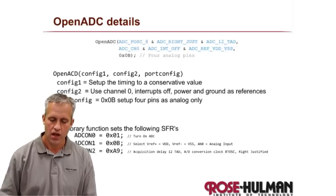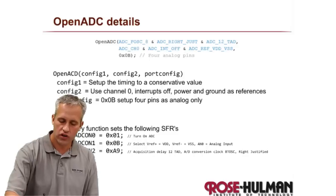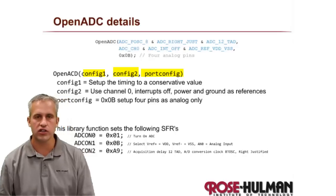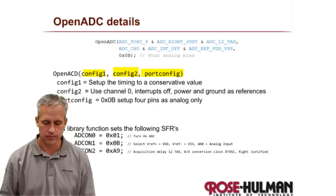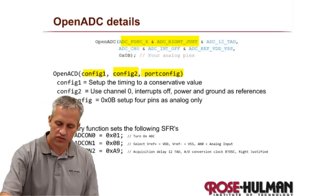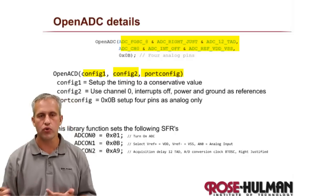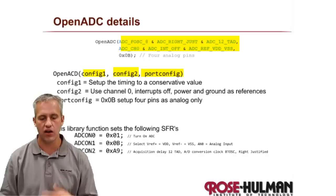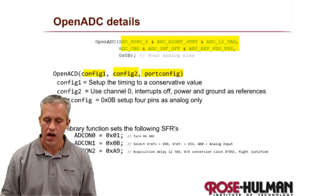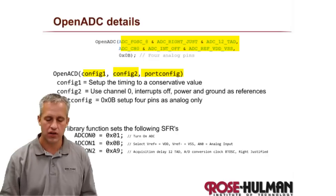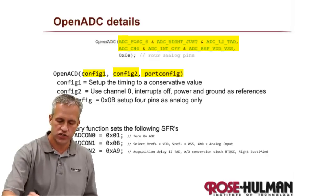The openADC function has three parameters: configuration 1, configuration 2, and a port config. If you look at these configuration parameters, we could go through in detail about what they do, but honestly we don't have to — because they never really change.